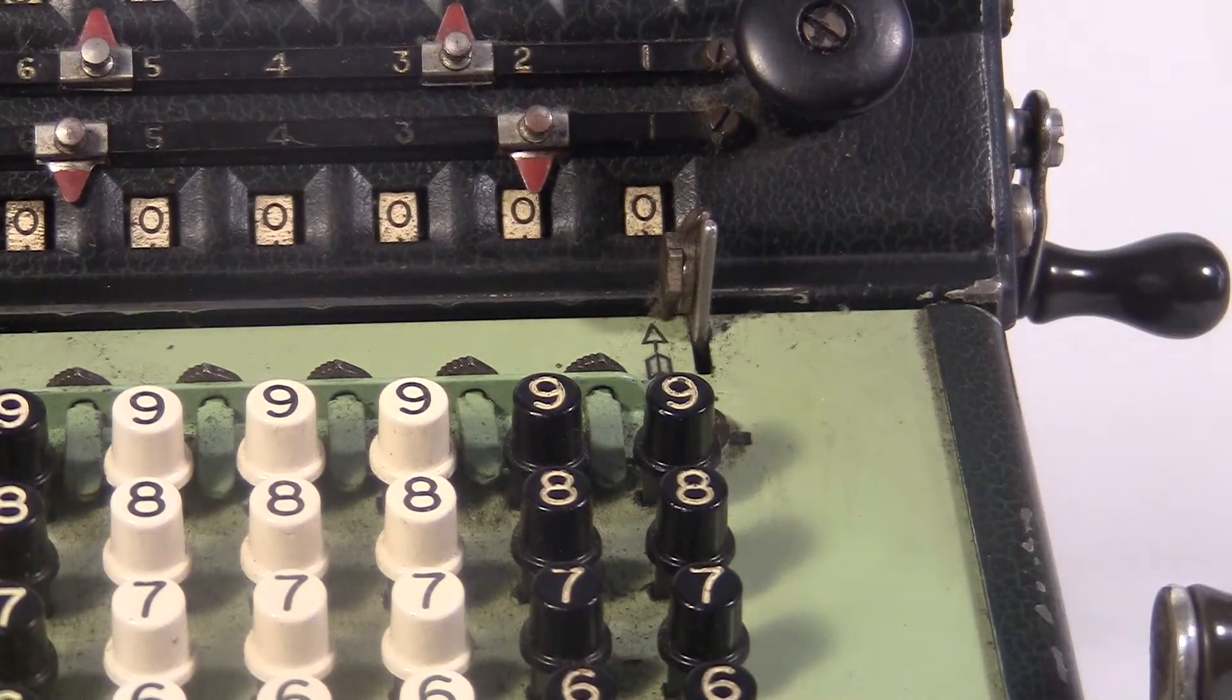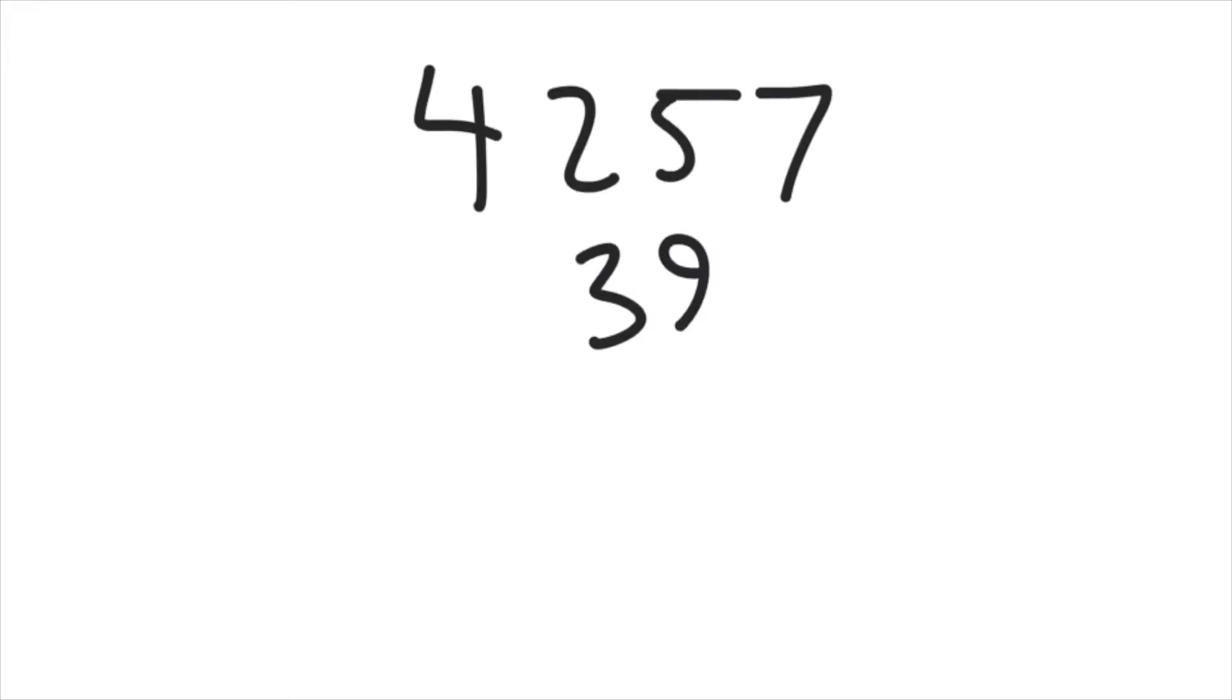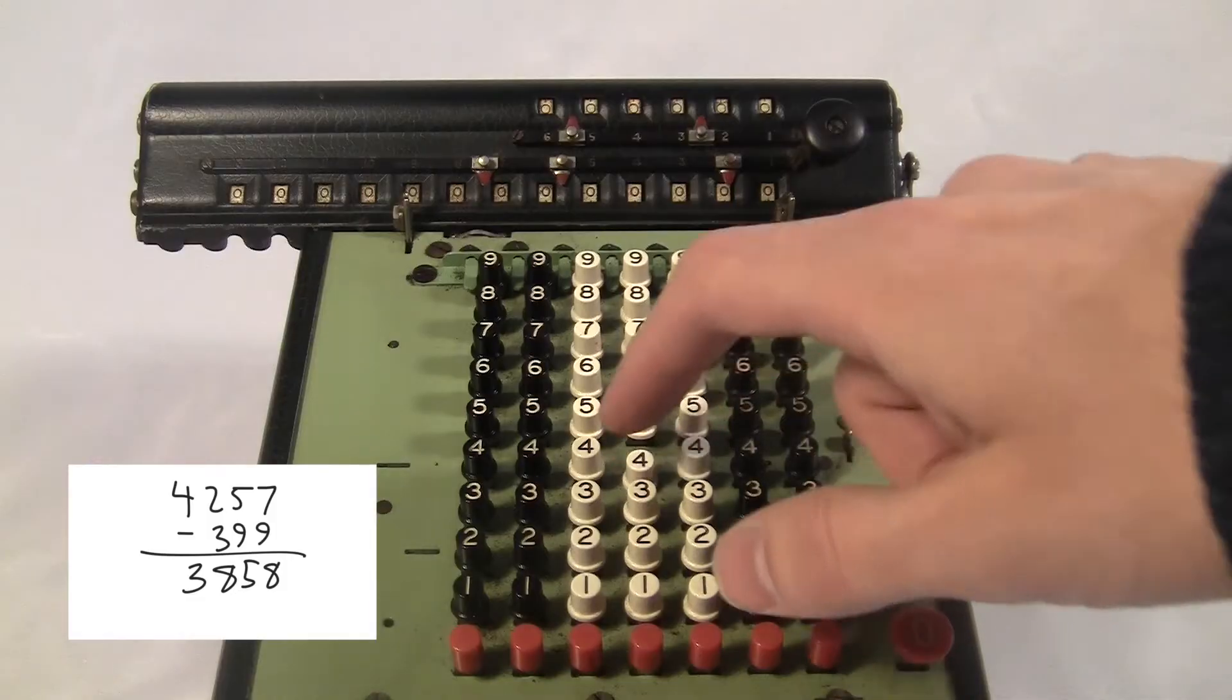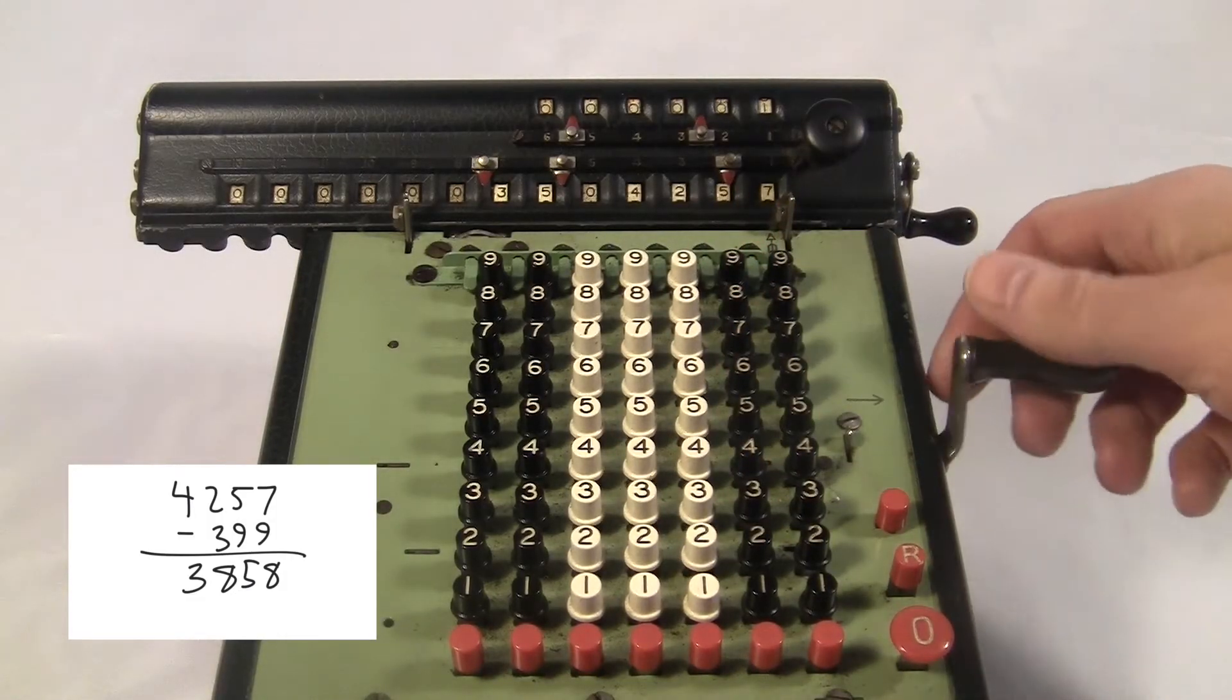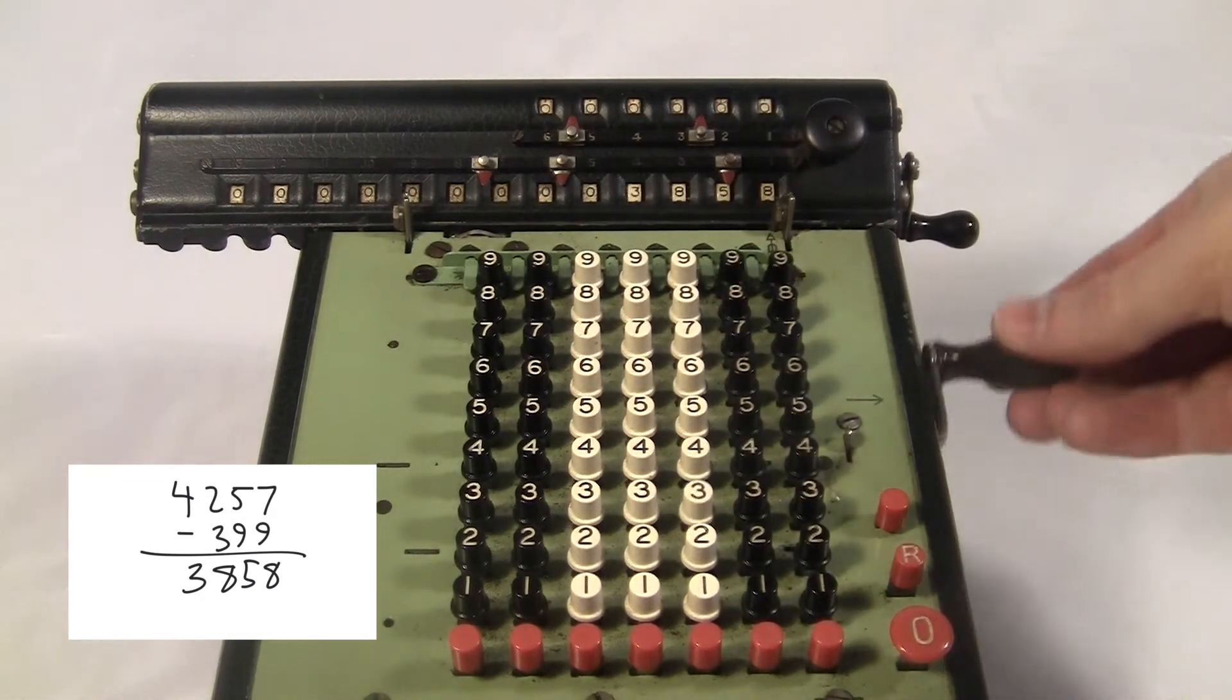The upper crank clears the display back to zero. You can also subtract. First, you load in the number you want to subtract from, and then type the smaller number and subtract it by turning the crank backwards. So you push the crank forward to add and backward to subtract. It's pretty simple.